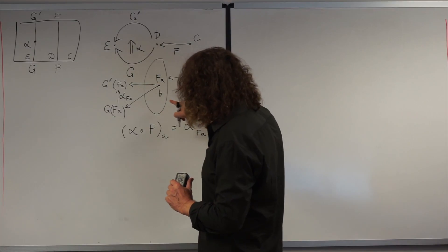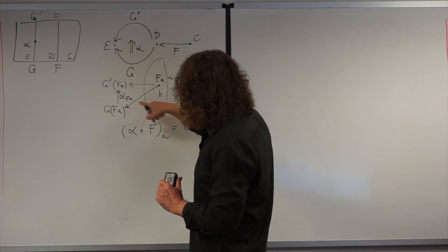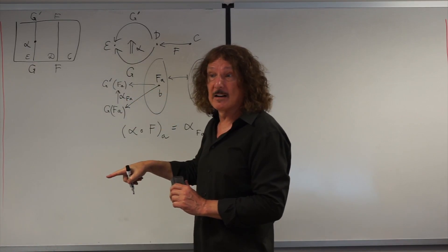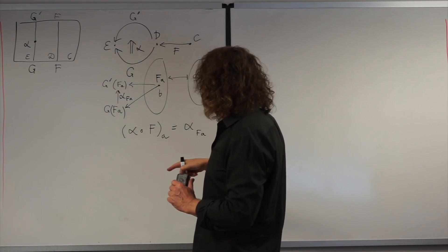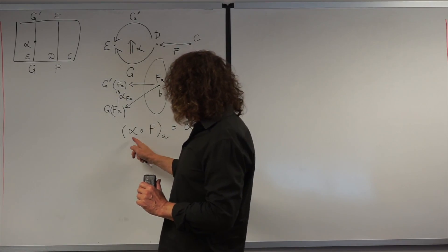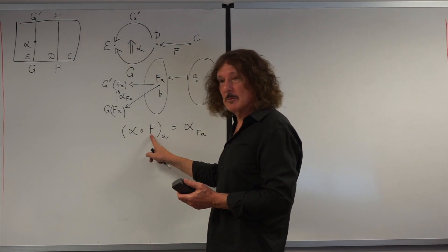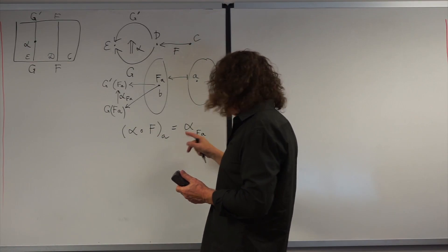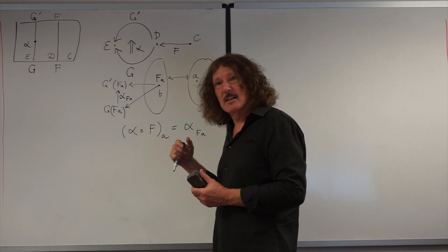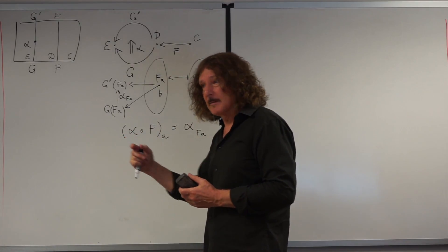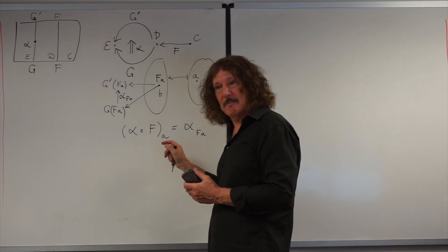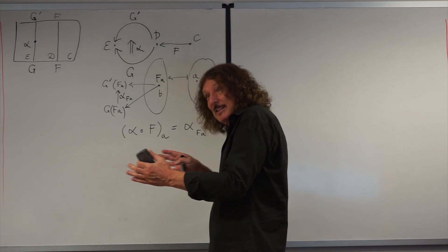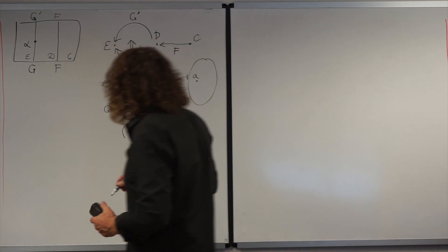I used the component alpha at FA of my alpha to define this. Whiskering with a functor on the right means taking the natural transformation but shifting its argument — its point. So I'm shifting it by F. It's the same natural transformation, but shifted by F.